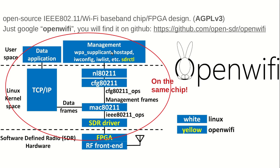A unique thing about our design is that the Wi-Fi chip — the FPGA — and the computer are actually in the same chip, because we use the Xilinx Zynq FPGA, where there are both FPGA and ARM processor. So our Wi-Fi chip sits together with Linux and the FPGA in the same physical chip.